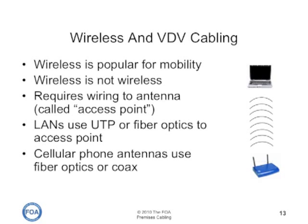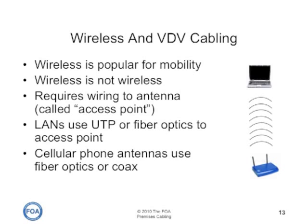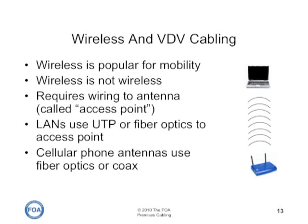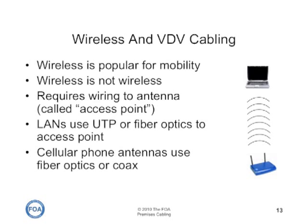Today, most users like to have mobility, and mobility means wireless. Their laptops, tablet computers, and even their cell phones will connect up to Wi-Fi. But wireless is not wireless — it merely uses an access point connection to the device, replacing a patch cord. So all the access points have to be wired, either with UTP or fiber optics, into the normal local area network backbone. Cellular phone antennas are also used indoors often, and those typically use either fiber optics or coax to connect to.